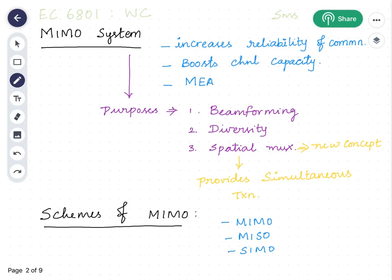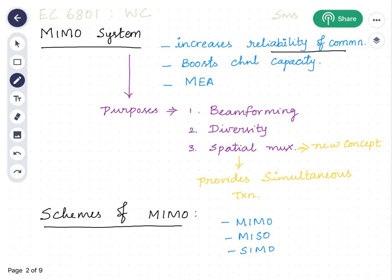What is a MIMO system? MIMO stands for Multiple Input Multiple Output. The advantages of MIMO systems include: it will increase the reliability of the communication, so data transmission will be reliable, and it boosts the channel capacity.